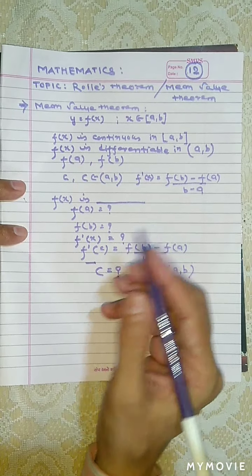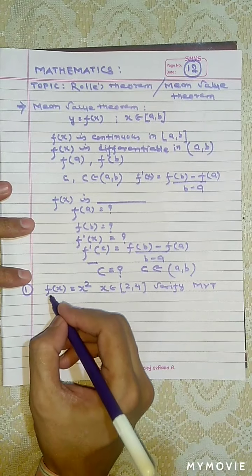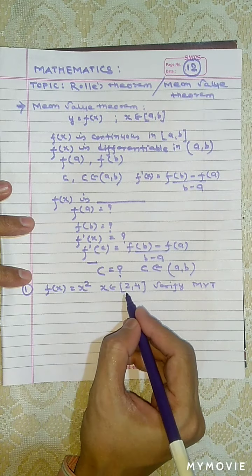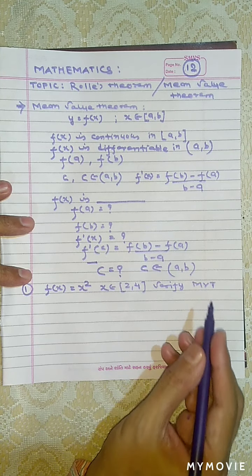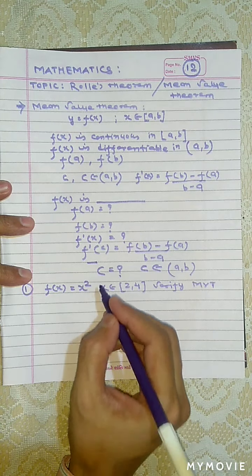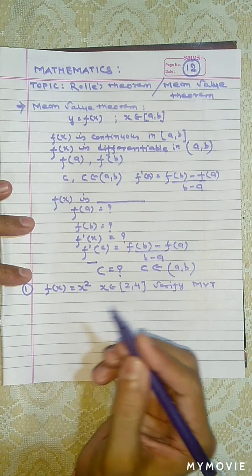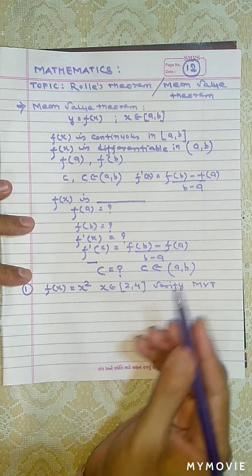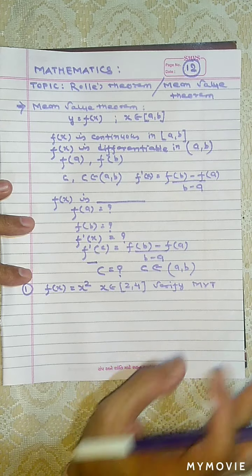Now let's practice. Practice 1: f(x) = x², x belongs to closed interval [2, 4], verify mean value theorem. Note: this is also called Lagrange's Mean Value Theorem — so if the exam says verify Lagrange's Mean Value Theorem, don't be confused, it is the same thing.